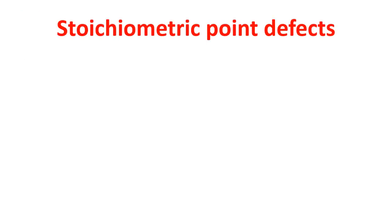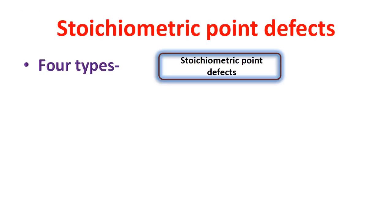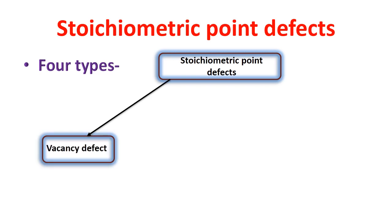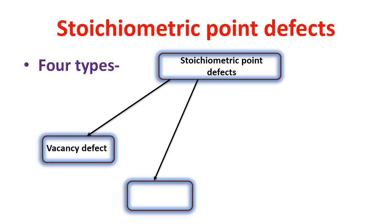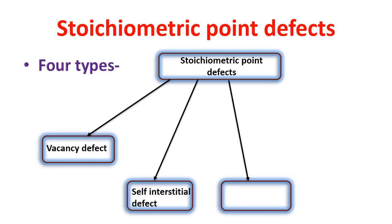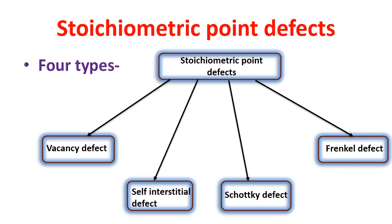These defects are also called thermodynamic defects and intrinsic defects. The stoichiometric point defects are of four types: first is vacancy defect, second is self-interstitial defect, third is Schottky defect, and the last one is Frenkel defect.